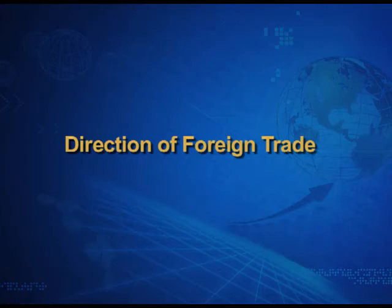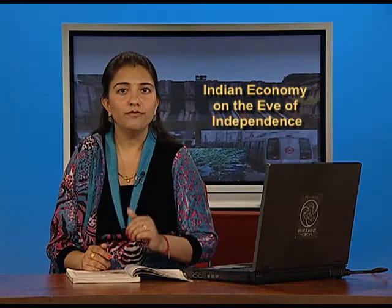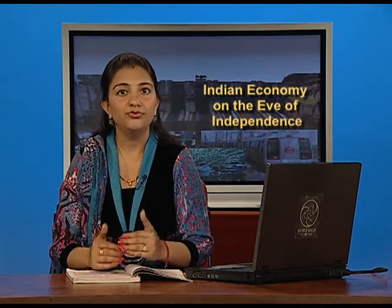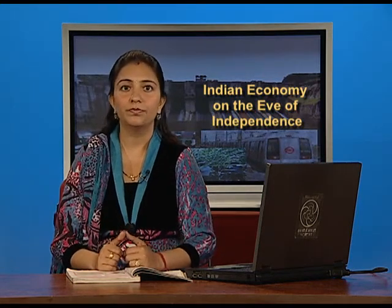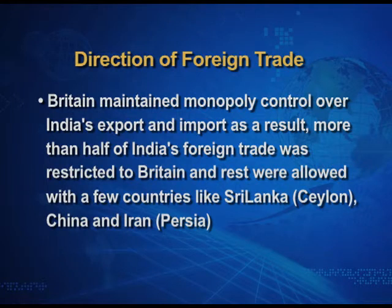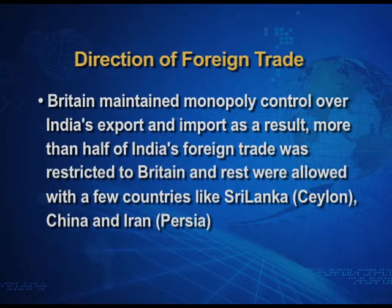Direction of foreign trade means which countries India was trading with at that point of time. Britain maintained monopoly control over India's exports and imports. As a result, more than half of India's foreign trade was restricted to Britain, and the rest was allowed only with a few countries like Sri Lanka (then called Ceylon), China, and Iran (then called Persia).